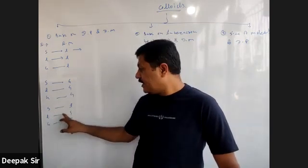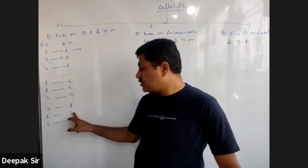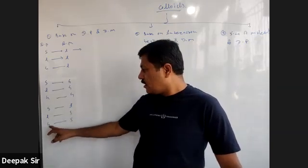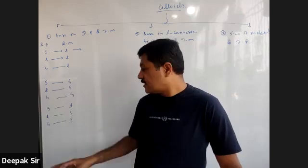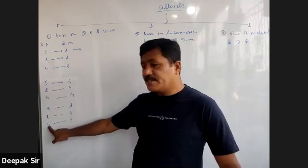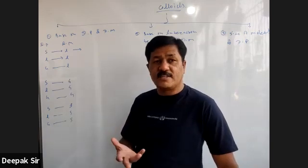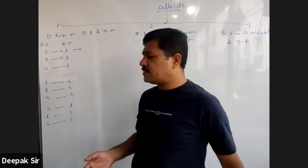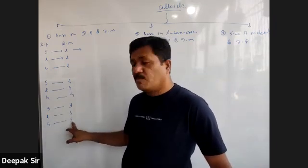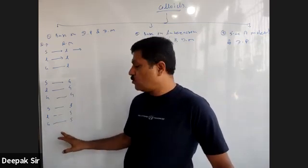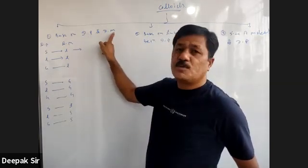Liquid in solid — examples include toothpaste and different types of gel, like wet-look gel. These are liquid in solid. Gas in solid — examples are sponge, bread, and cake, where gas is trapped inside the solid. So these are the nine types of solutions based on disperse phase and dispersion medium — solid, liquid, and gas for each component gives nine combinations.